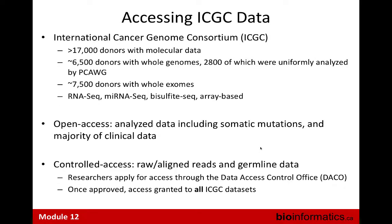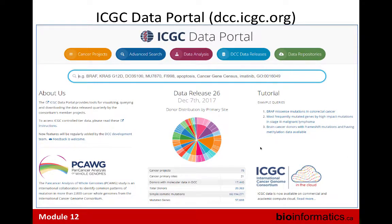For ICGC data, you can access about 6,500 donors with whole genomes — 2,800 of which are part of PCAWG and uniformly analyzed. There are 7,500 donors with whole exomes, and some have RNA-seq, microRNA, bisulfite-seq, and array-based calls as well. For controlled access you apply through the Data Access Control Office, and once approved you get access to all ICGC data.